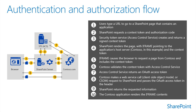In Step 8, contoso.com can use the access token to make a web service call or client-side object model request to SharePoint, passing the OAuth access token in the HTTP authorization header. In Step 9, SharePoint returns the information that contoso.com requested. In Step 10, the contoso.com app renders the iframe contents as per the user's request in Step 1. This completes the OAuth transaction process. The user now sees the SharePoint page fully rendered.